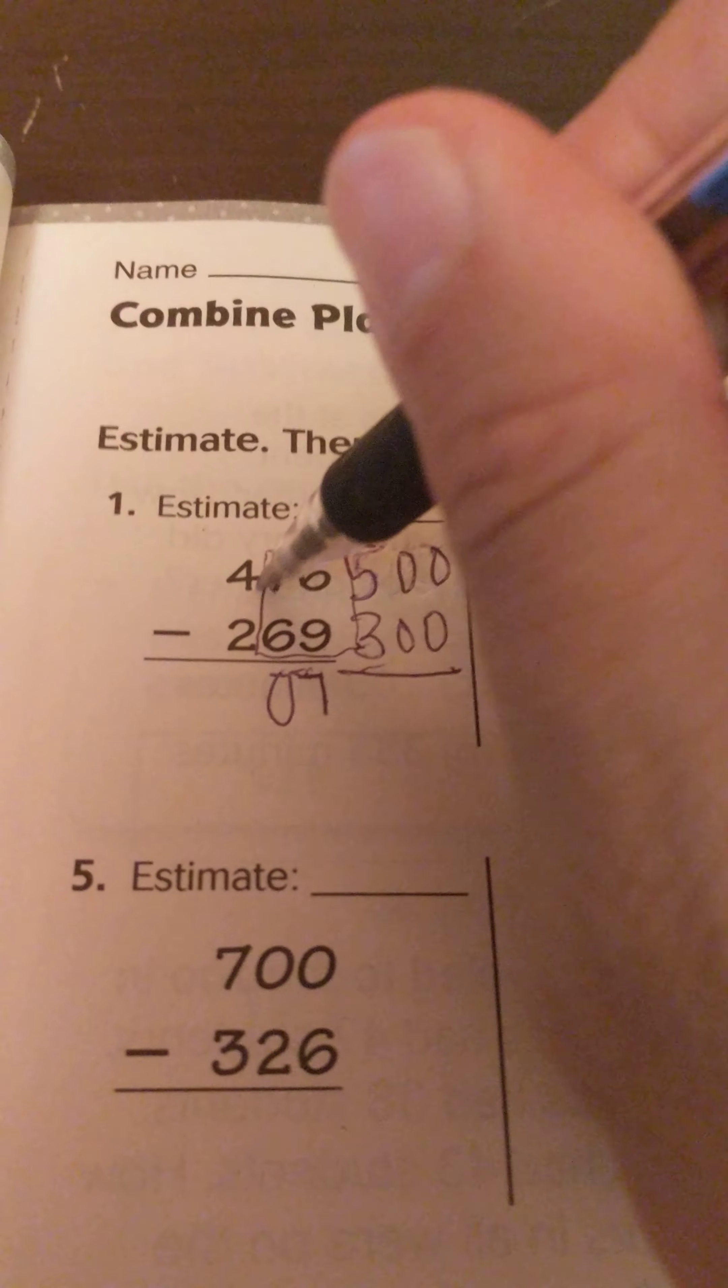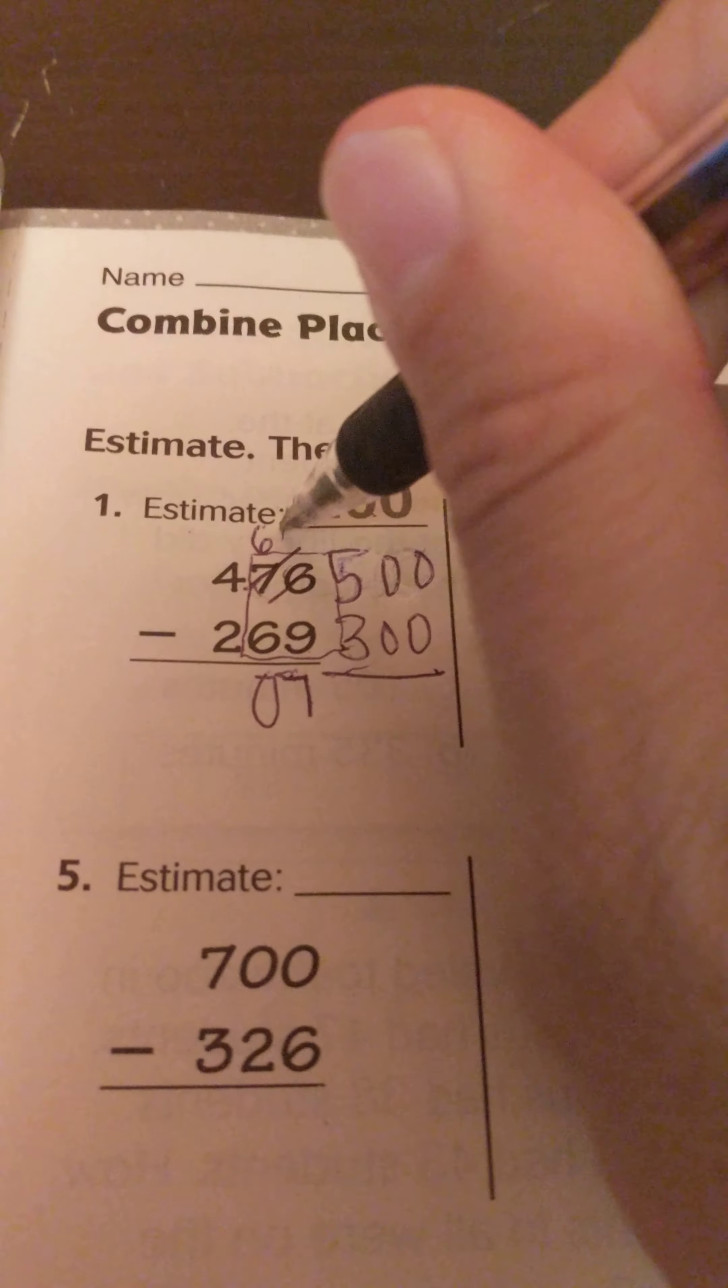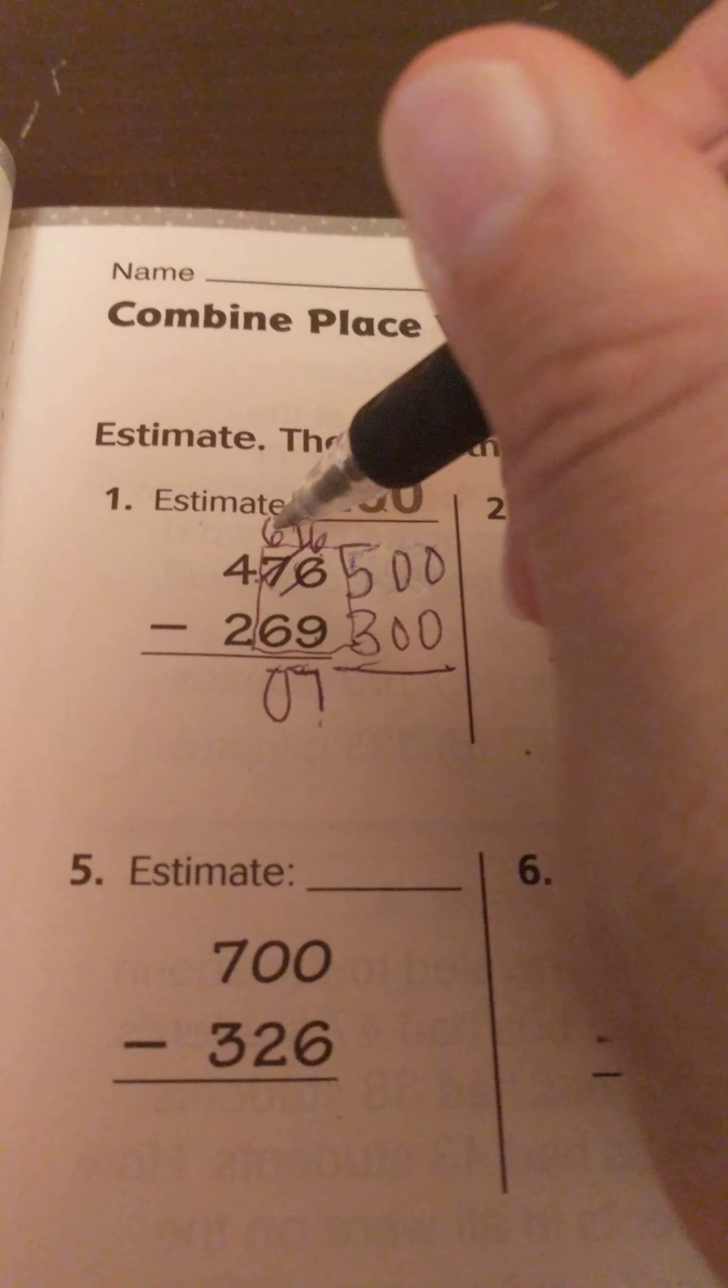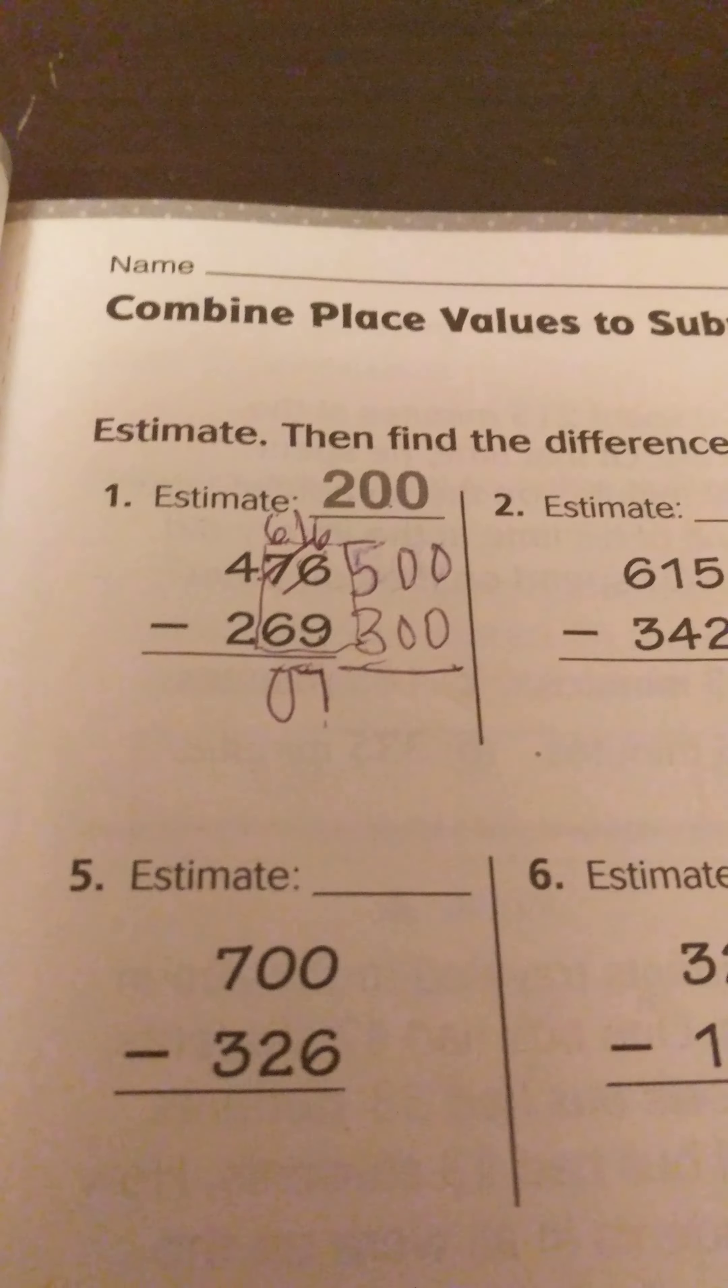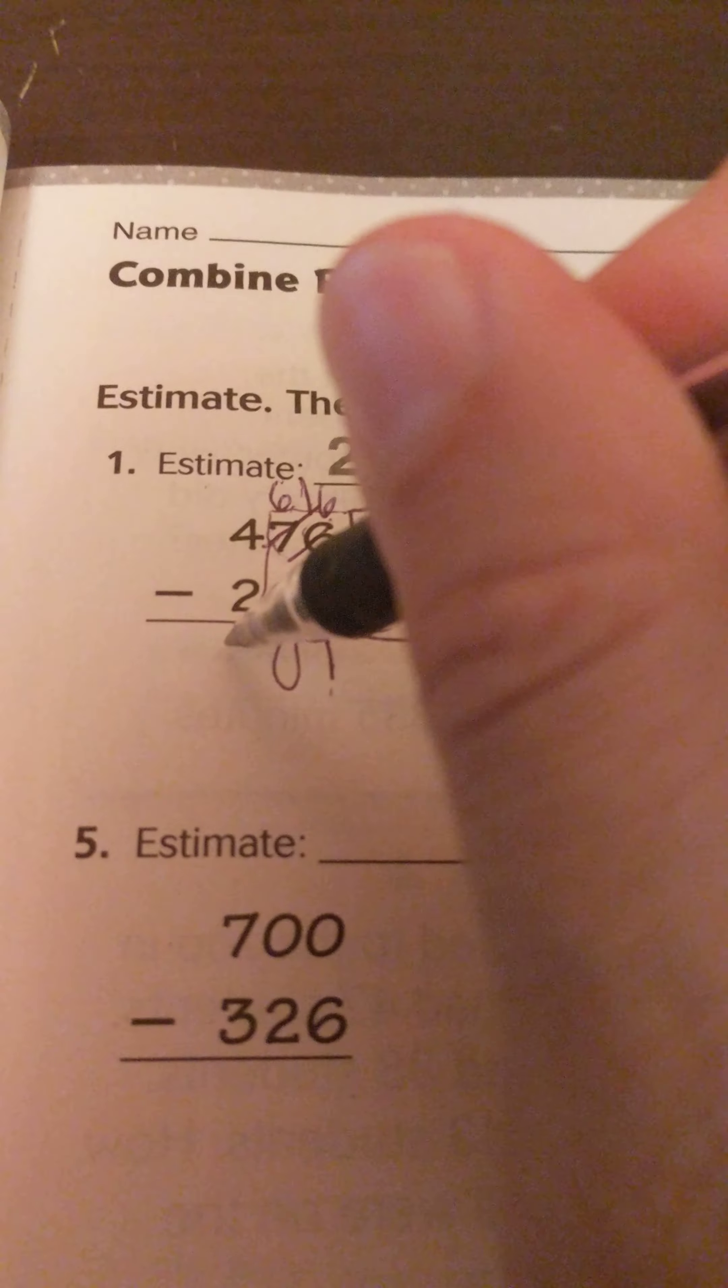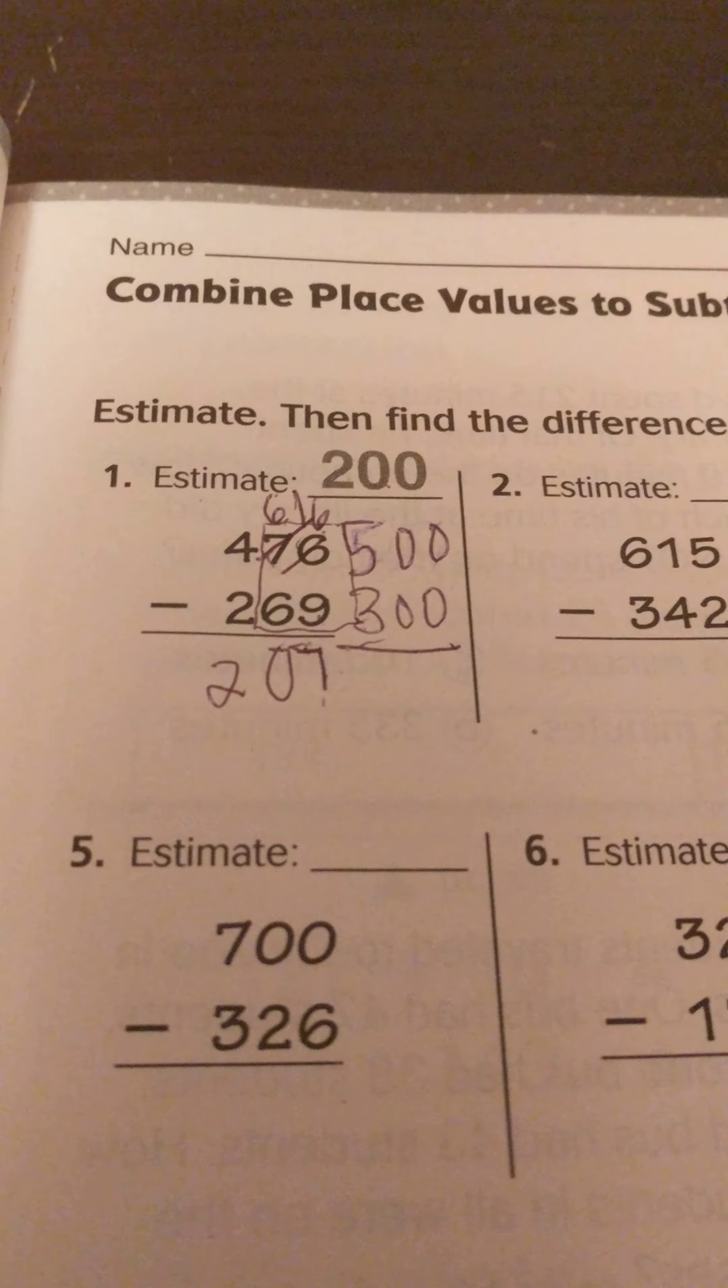So of course we would normally regroup here. So this would be 6 and this would turn to 16. 16 minus 9 equals 7. 6 minus 6 equals 0. And then when we look at the hundreds, 4 minus 2 is still 2. So it'd be 207 which obviously is close to our estimate there.